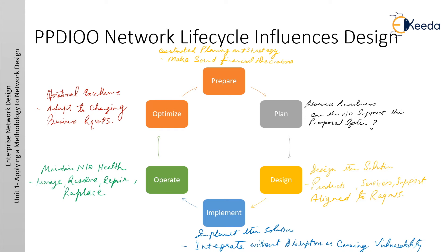The Optimize phase might lead to network redesign if too many network problems or errors arise, if performance does not meet expectations, or if new applications are identified to support organizational and technical requirements. Although design is one of the six PPDIOO phases, all the other phases influence design decisions and interact closely with it. The requirements derived from the Prepare and Plan phases are the basis for network design. The Implement phase includes initial verification of the design on the actual network. During the Operate and Optimize phases, the final decision is made about the appropriateness of the design. Based on network analysis and any problems that arise, the network might have to be redesigned to correct any discovered errors.